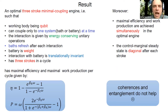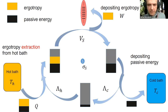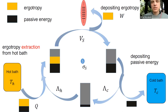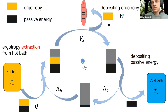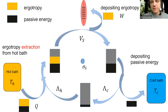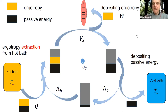Our goal is to find the optimal engine: the parameters giving the best efficiency and maximum work produced per cycle. Efficiency is work divided by heat input. We consider the most minimal engine: a two-level working body with only three strokes per cycle and only coupling to one system at a time.